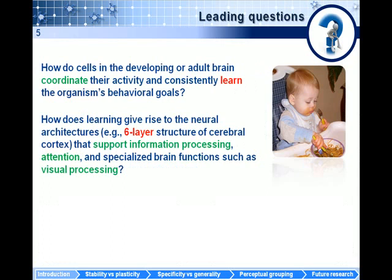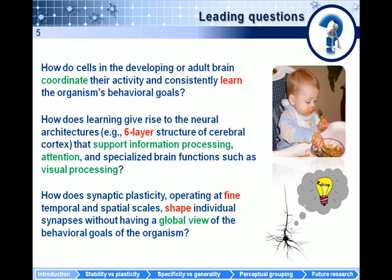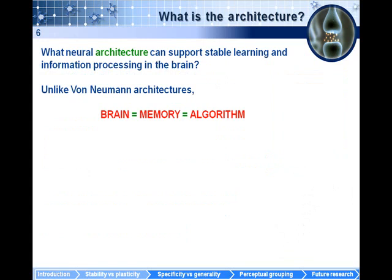In other words: how do cells in the developing or adult brain coordinate their activity and consistently learn the organism's behavioral goal? How does learning give rise to the neural architecture that supports information processing, attention, and specialized brain functions such as visual perception? And how do neurons modify their synaptic connections without having very direct access to the behavioral goal of the organism — without knowing if the organism is right or wrong? What neural architecture can support stable learning and information processing in the brain?